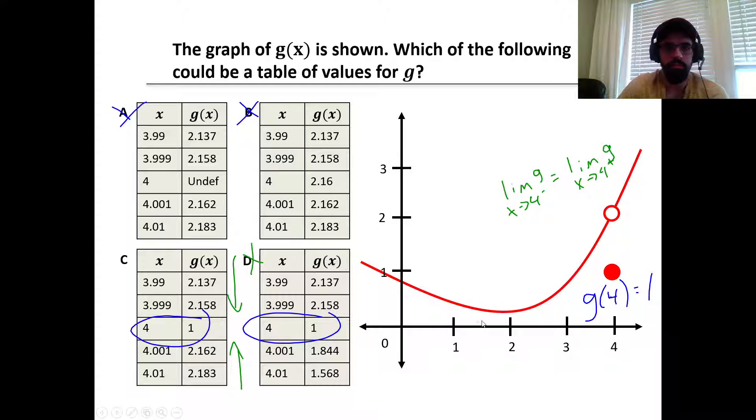So let's get straight to some examples here. The graph of g(x) is shown. Which of the following tables could be the table of values for g? If we just take a look at our graph for g(x) here, we have this curve. We have a hole at x equals 4.